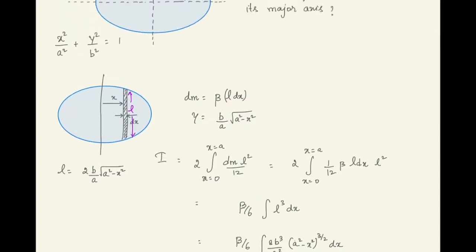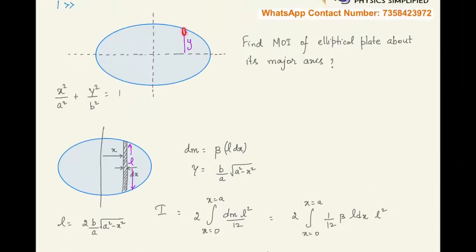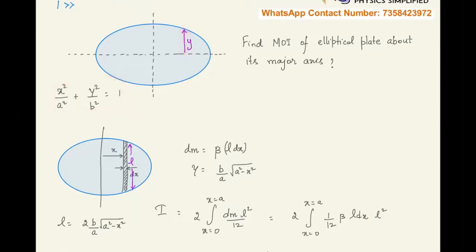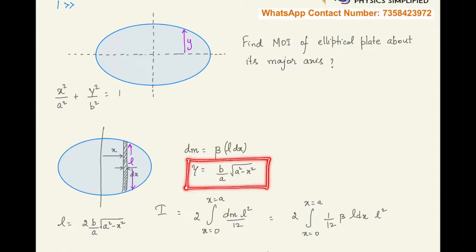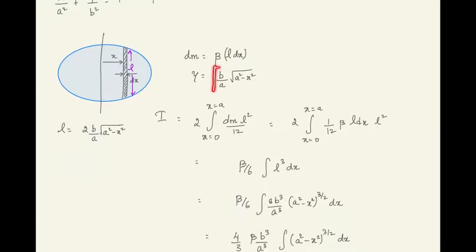We can write the expression for y, which is half the length of the rod, from the equation of the ellipse — so y in terms of x. From the ellipse equation, y = (b/a)·√(a² - x²), since y² = (b²/a²)·(a² - x²). This gives us l in terms of x.